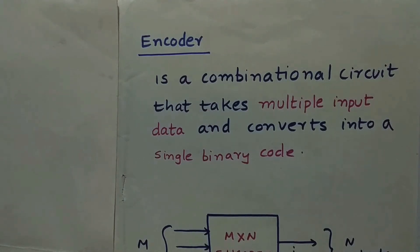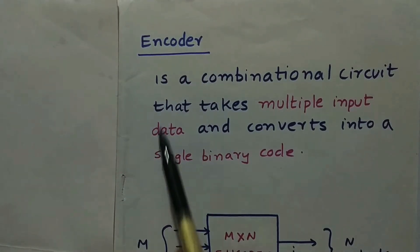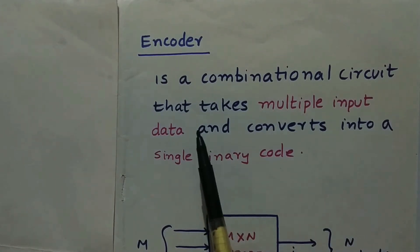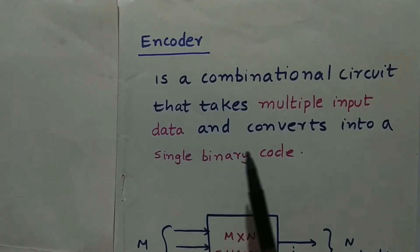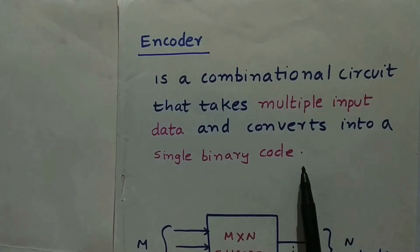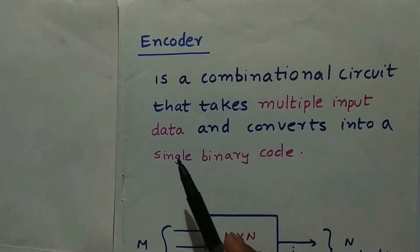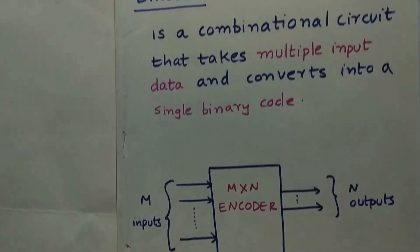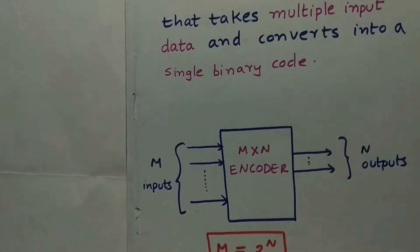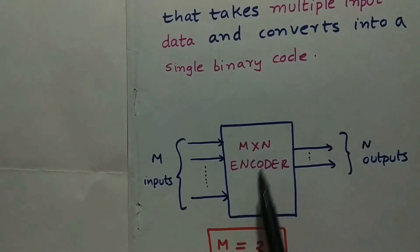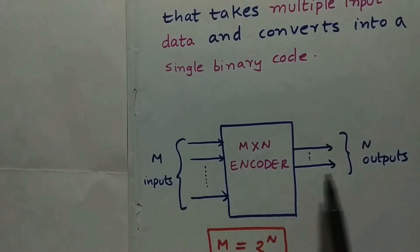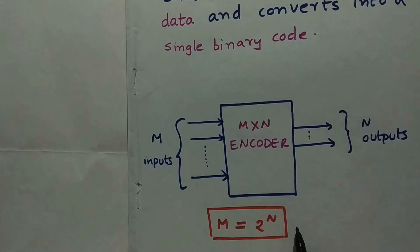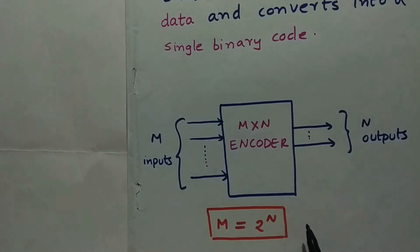Welcome back. Today's topic is about encoders. An encoder is a combinational circuit that takes multiple input data and converts it into a single binary code. Looking at the encoder block diagram, we have an m×n encoder where m inputs and n outputs follow the relation m equals 2 power n.